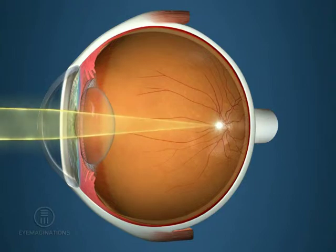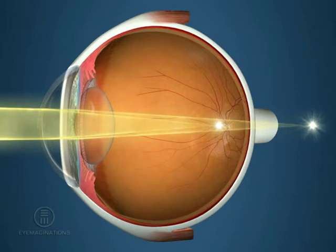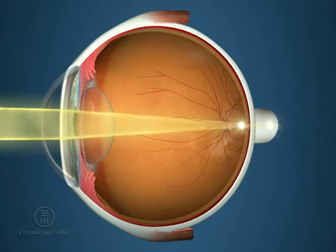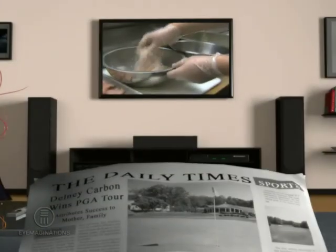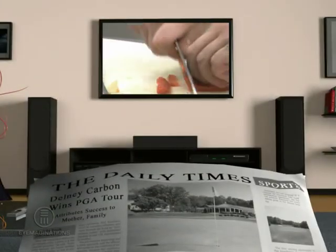If the problem is due to an error of refraction, it is the role of the ophthalmic practitioner to measure your disturbance and re-establish the proper focus of light, and thereby correct your vision problem.